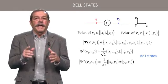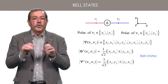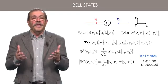Bell states play an important role in quantum information where entanglement is a key resource. From a practical point of view, it is possible to produce all these four states.